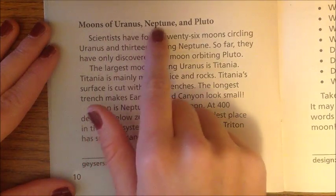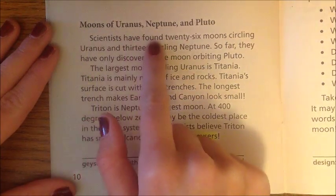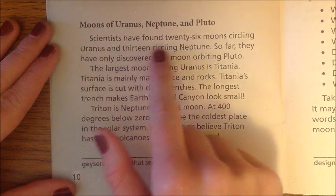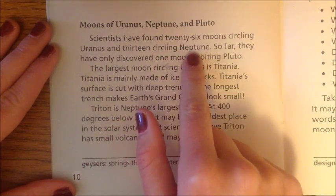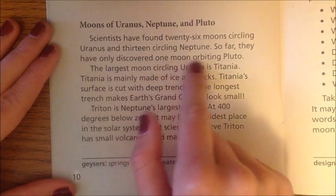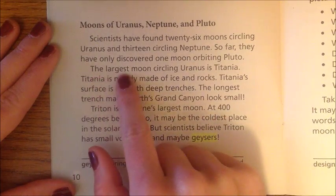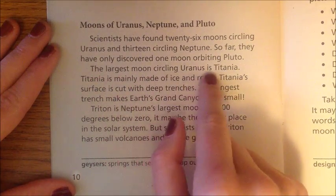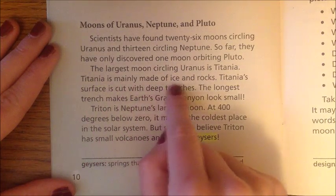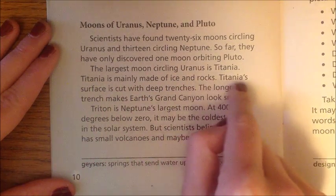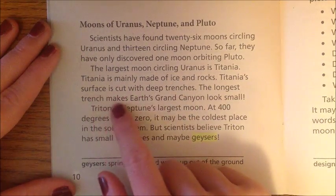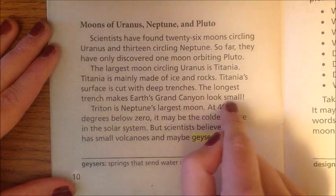Moons of Uranus, Neptune, and Pluto. Scientists have found 26 moons circling Uranus and 13 circling Neptune. The largest moon circling Uranus is Titania, which is mainly made of ice and rocks. Titania's surface is cut with deep trenches — the longest trench makes Earth's Grand Canyon look small.